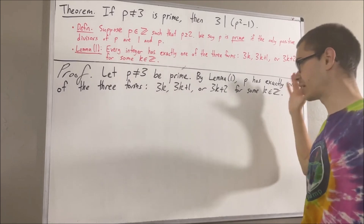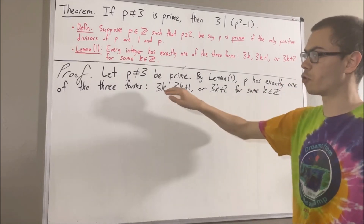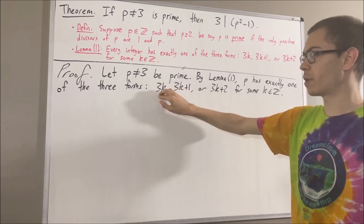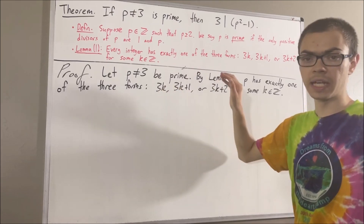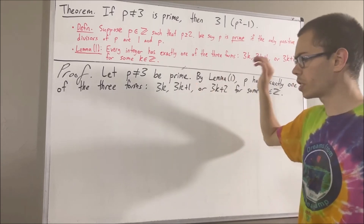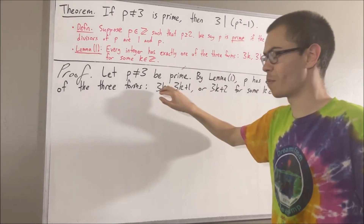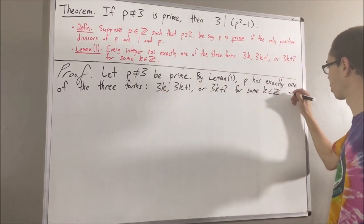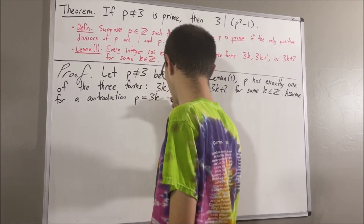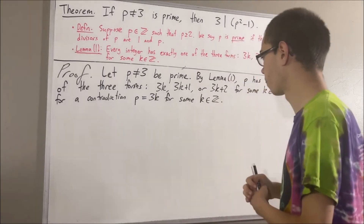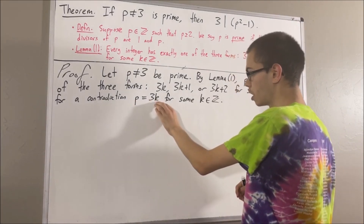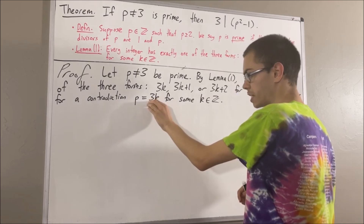Next, let's eliminate the possibility that p has the form 3k. Once we eliminate this possibility, this will tell us that p only has one of the other two forms. So let's assume for a contradiction that p has the form 3k. Then we see that p is equal to 3 times an integer, so 3 is a divisor of p.